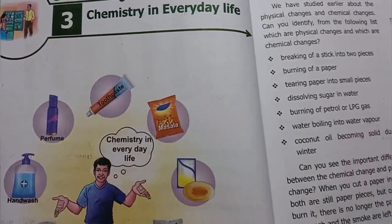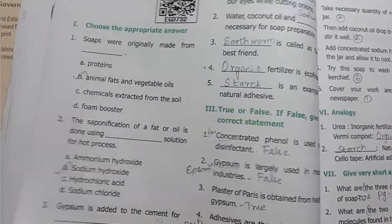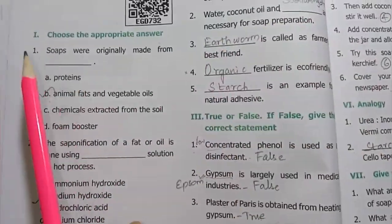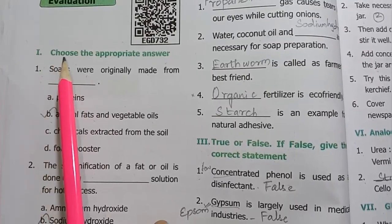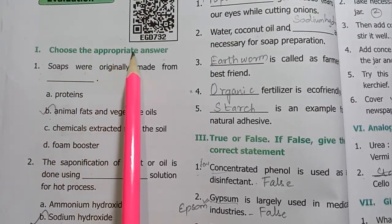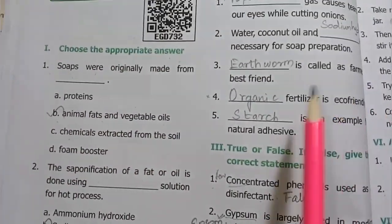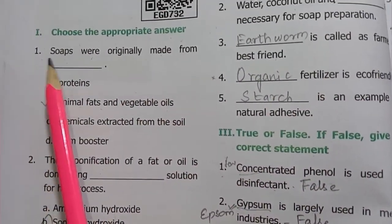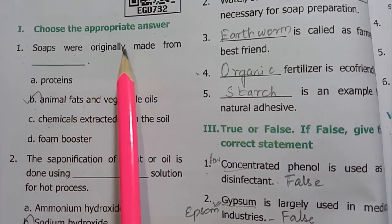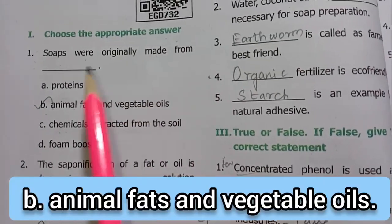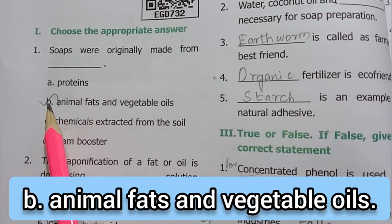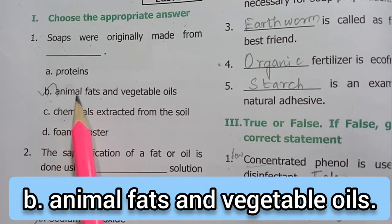Everyday life lesson — order book back exercise. Room letter 1: choose the appropriate answer. First one: soaps were originally made from — the answer is option B, animal fats and vegetable oils.